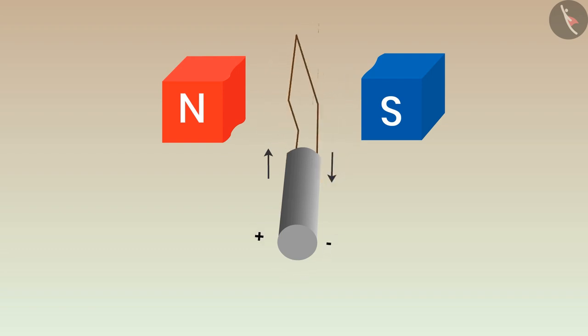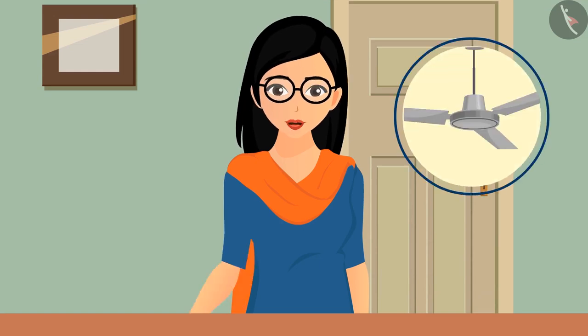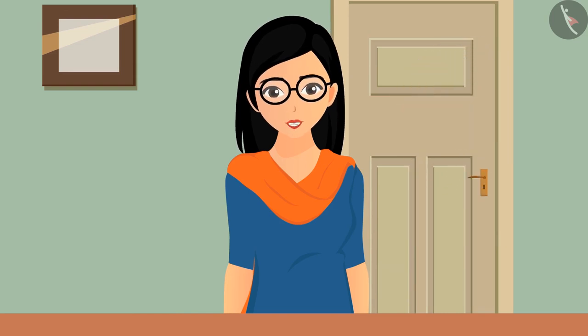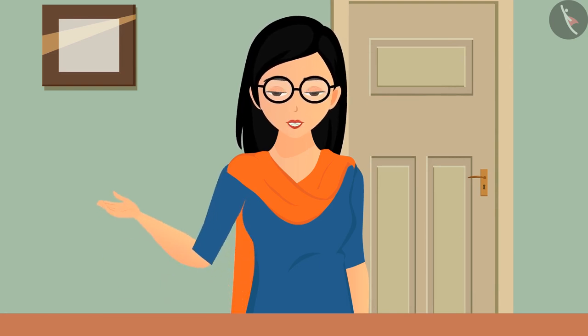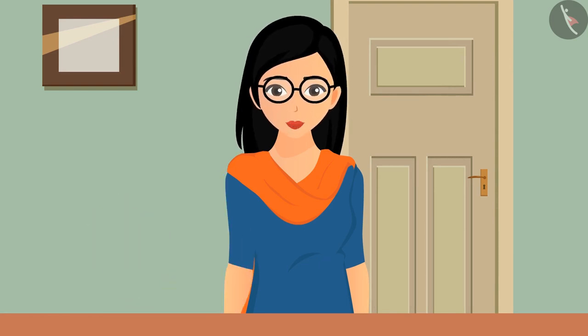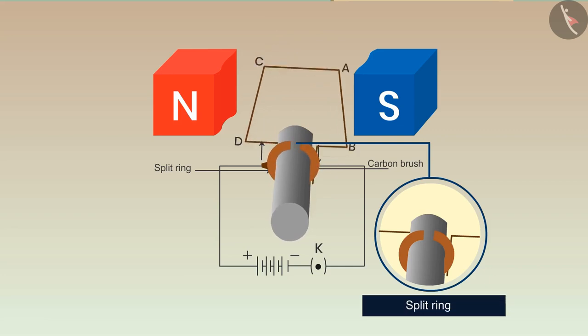Does this make any sense? Have you ever seen any fan or cooler that rotates in one direction for some time and then changes its direction? No, both of them keep rotating in one direction only. Then what exactly are we missing in the motor to keep it rotating in one direction only? Split ring.